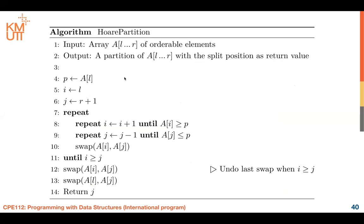Here we use Hoare's partitioning function. The partitioning function selects the pivot — that is element A[l], the leftmost element — then partitions into green and pink groups: elements less than or equal to P on the left, and elements greater than or equal to P on the right. This is a simple algorithm for Hoare's partitioning, and you keep applying it to arrive at the sorted list.